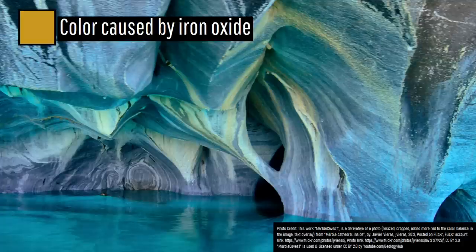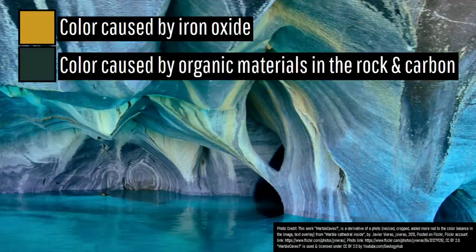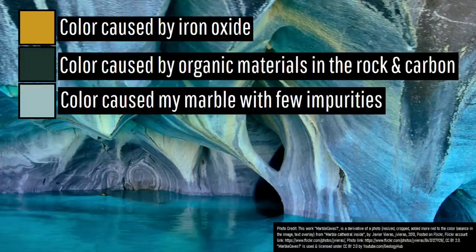Orange occurs due to iron oxide inclusions, which due to weathering naturally have a rust-like appearance. The black represents what was once fossil-rich limestone with abundant carbon from organic material before it turned to marble. The white represents marble with very few impurities, as this represents the default color of calcium carbonate, or CaCO3.